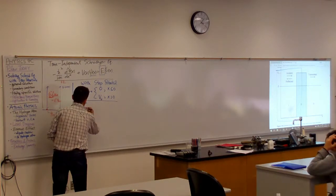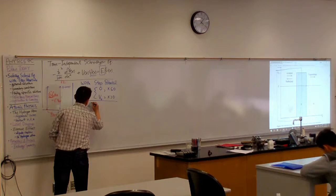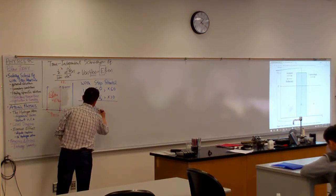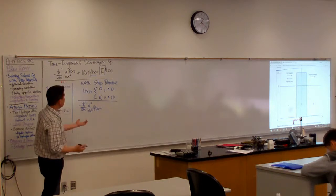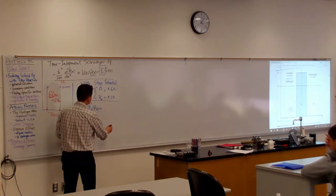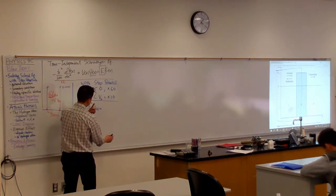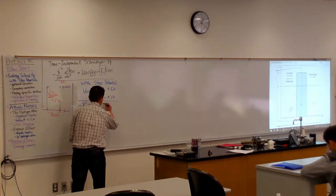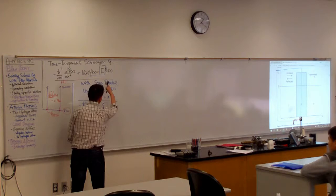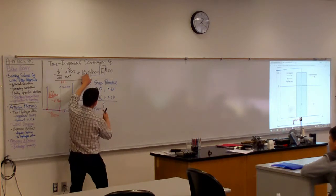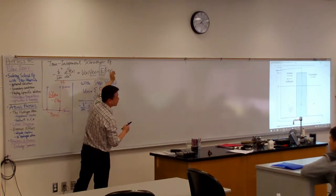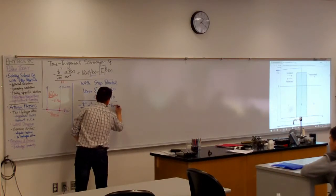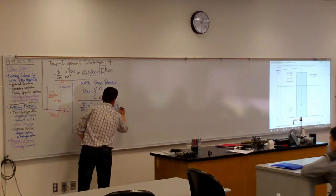Minus h bar squared over 2m. Second position derivative of wave function is equal to, let me write down three different forms here. The first would be the most general form. So, I'm imagining moving this over and factoring out the wave function. So, E minus V of X, psi X.